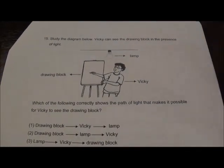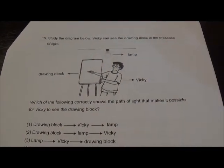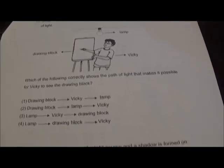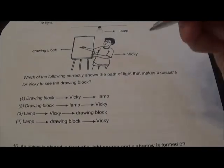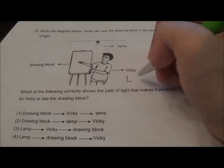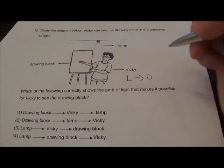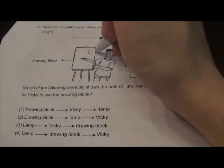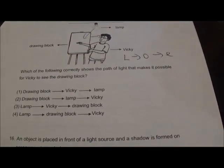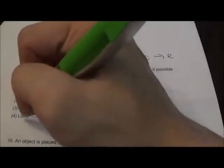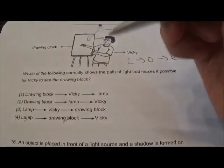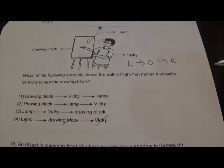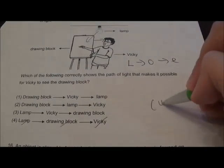Question 15: Vicky can see a drawing block in the presence of light. Remember the path is: light → object → eye. So you should have lamp, then drawing block, then Vicky. Question 15, your answer is 4.